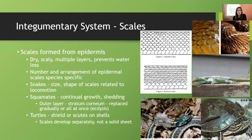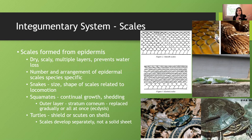We'll start with the integumentary system, which in reptiles is scales. Scales are formed from the epidermis of reptiles. In general, scales of reptiles are dry and scaly, and there are multiple layers which help prevent water loss. The number and arrangement of the epidermal scales is species-specific — we can actually use the number and arrangement of scales to identify species. For turtles, we look at the scutes, and for skinks, we look at the scales along their mouth to differentiate one species from another.